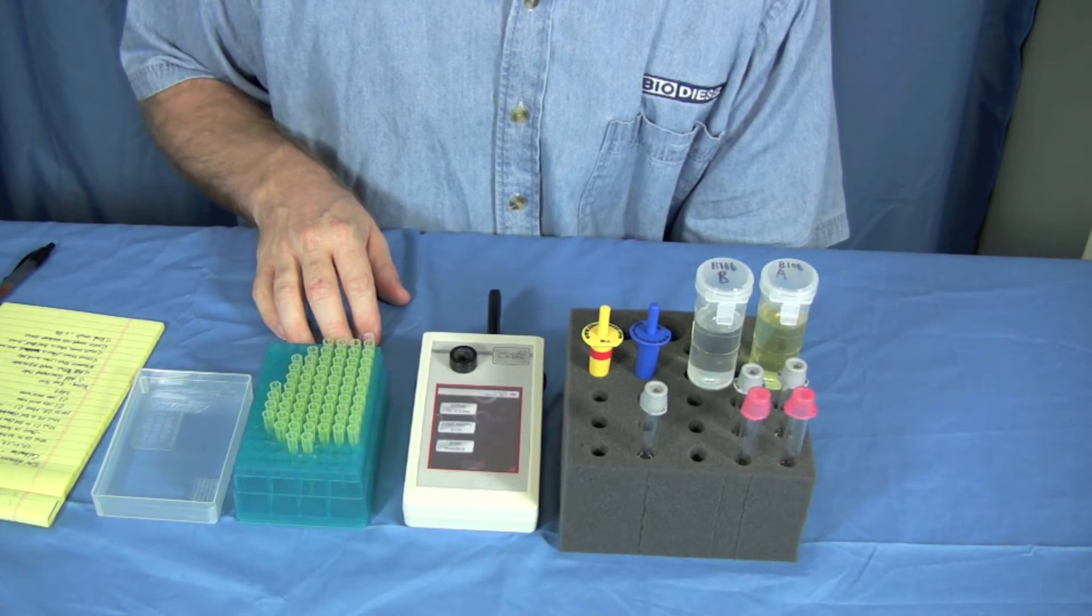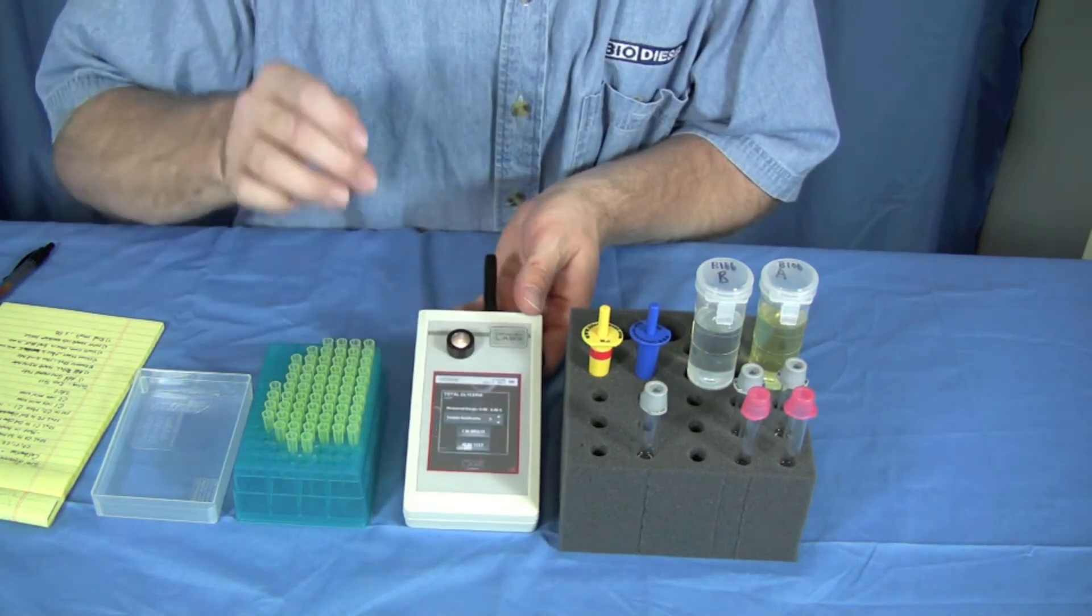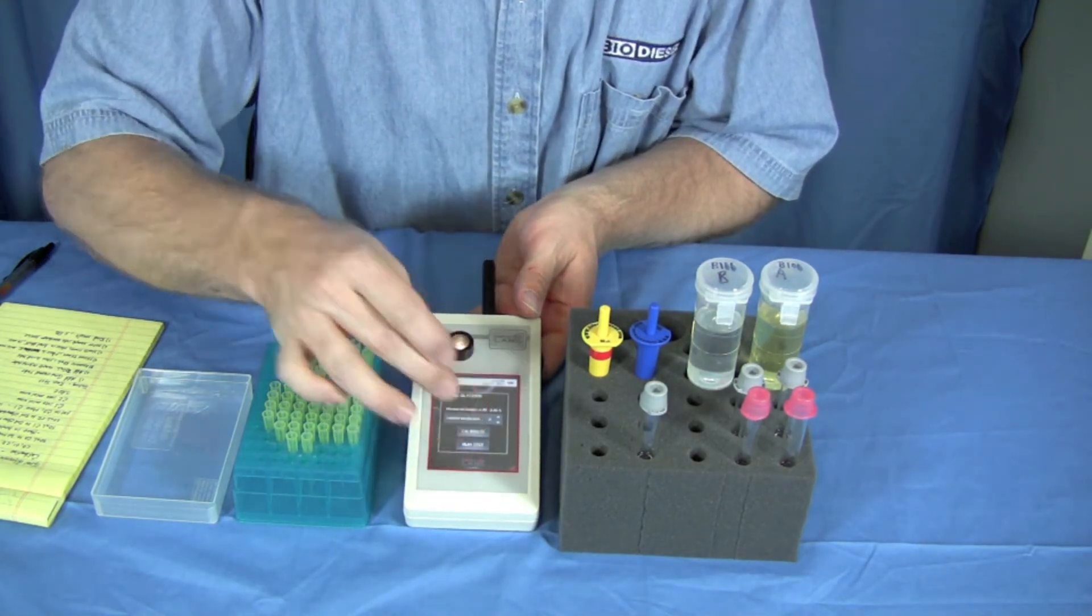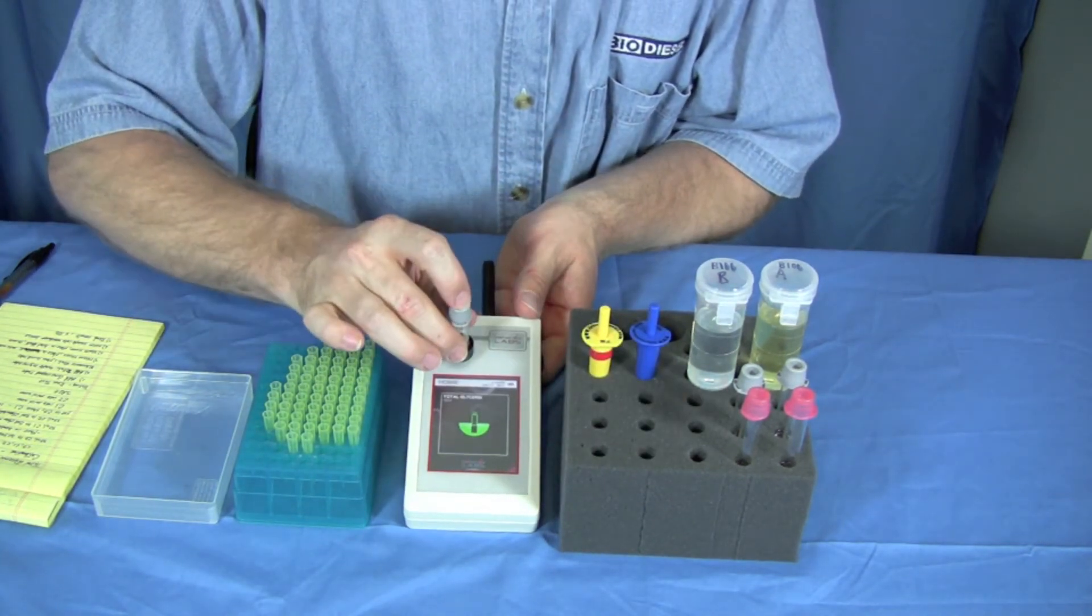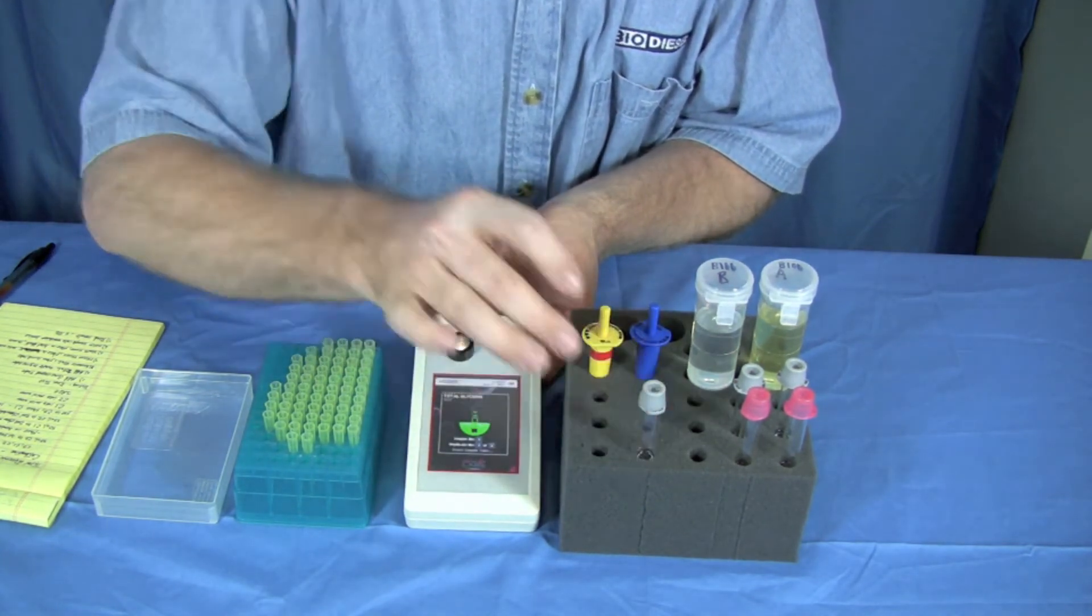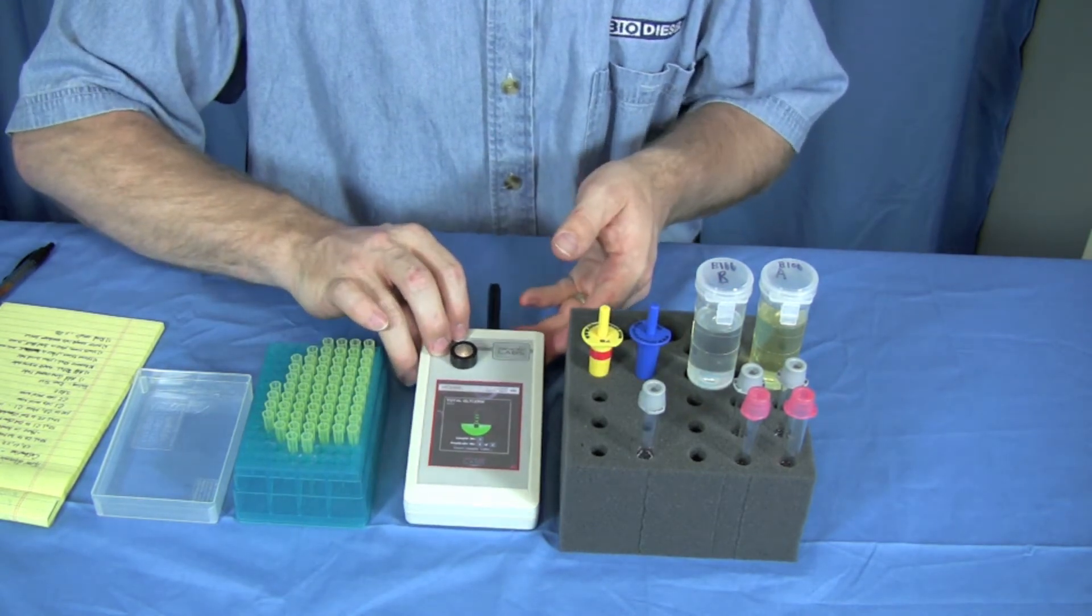We're going to perform a total glycerin test. To start the test, you just choose total glycerin test and run the test. We're going to take a blank tube, put it in, pull it out. Now it's time to prepare our samples.